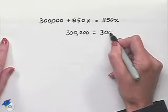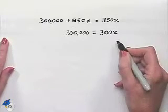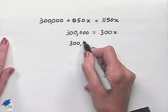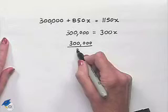That will leave us with $300,000 on the left. Subtracting $850 from $1,150 gives us $300.